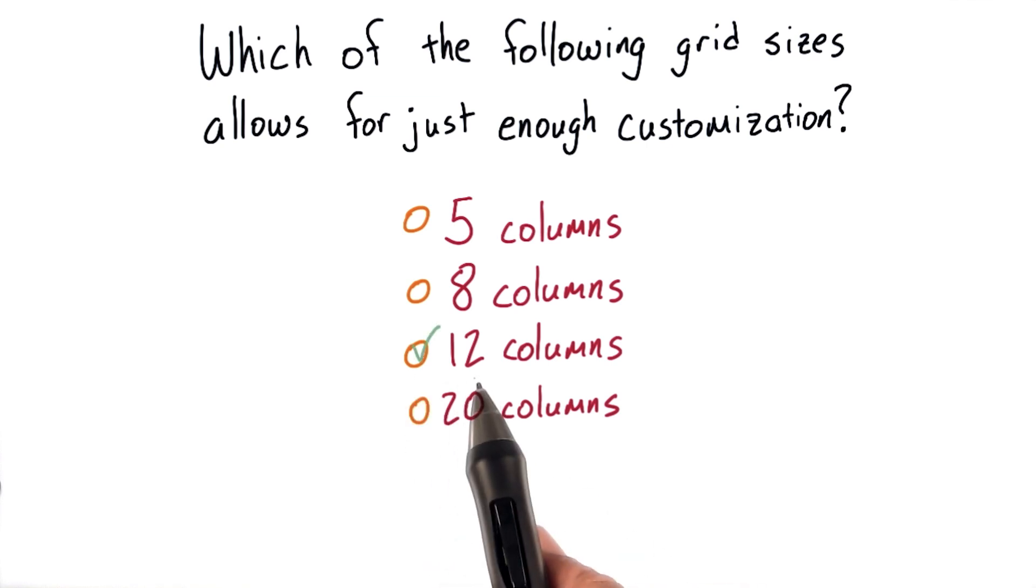This means that the correct answer is 12 columns. And in fact, most of the grid systems, if not all of the grid systems that you'll see today, use 12 columns.